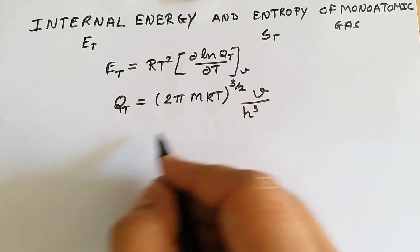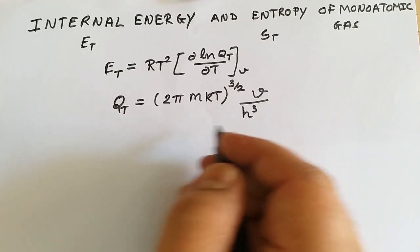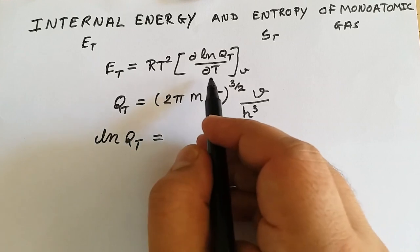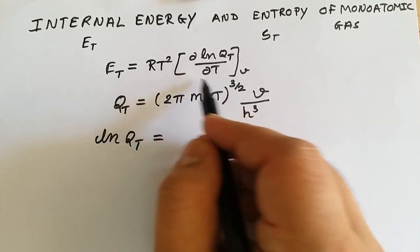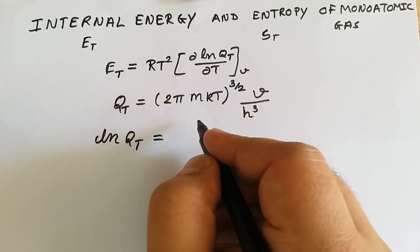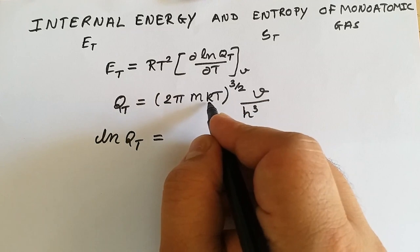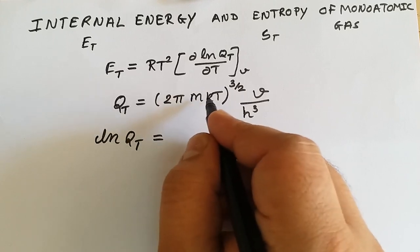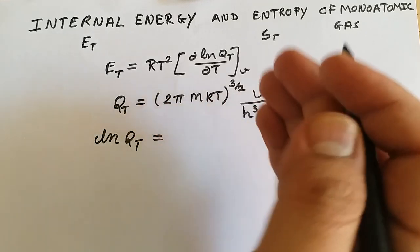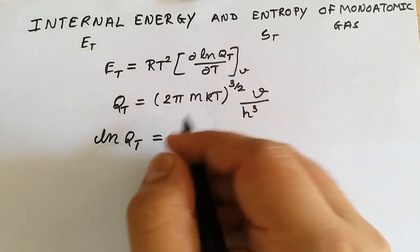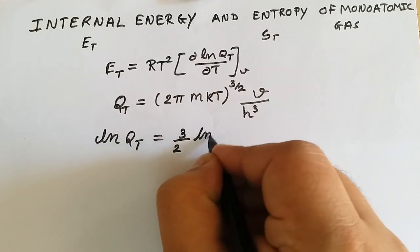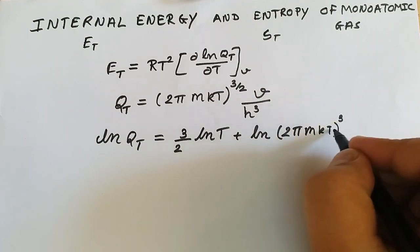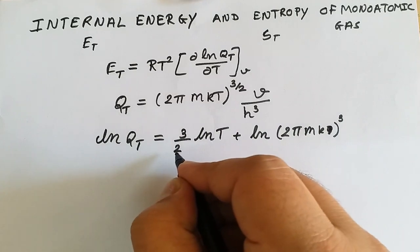To do that, we take the logarithm on both sides. Taking ln of q_t, we need to differentiate with respect to temperature. Terms like volume, Planck's constant, Boltzmann's constant, and molar mass are independent of temperature, so we separate them. The only temperature-dependent term gives us (3/2) ln T, and the remaining constants are grouped together.